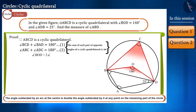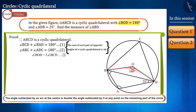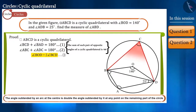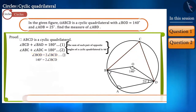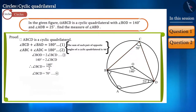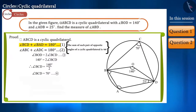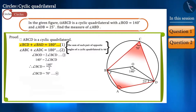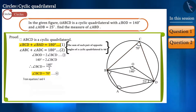We know the value of angle BOD. By placing its value in this equation we can find the measure of angle BCD — we get it as 70 degrees. Now look at equation one: the sum of angles BAD and BCD is 180 degrees. By placing the value of angle BCD, we can find the value of angle BAD.